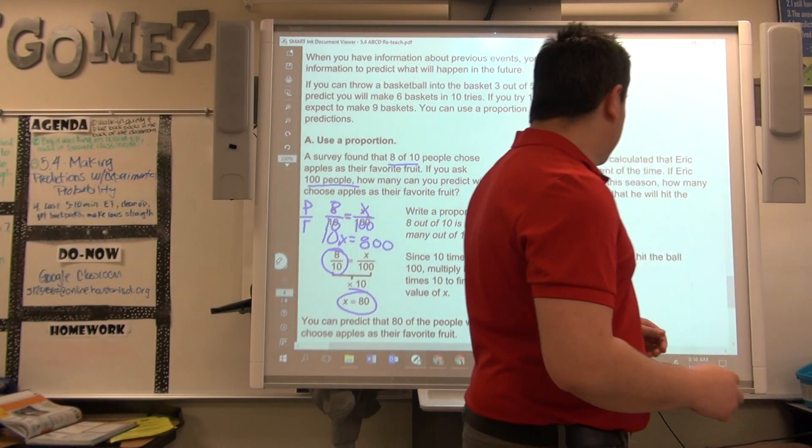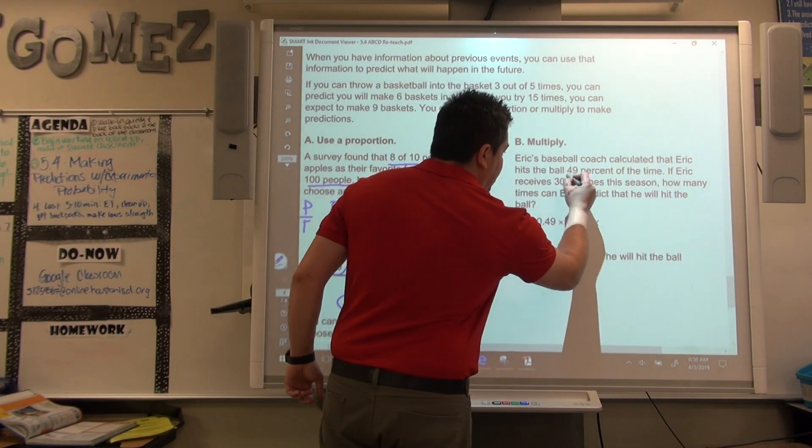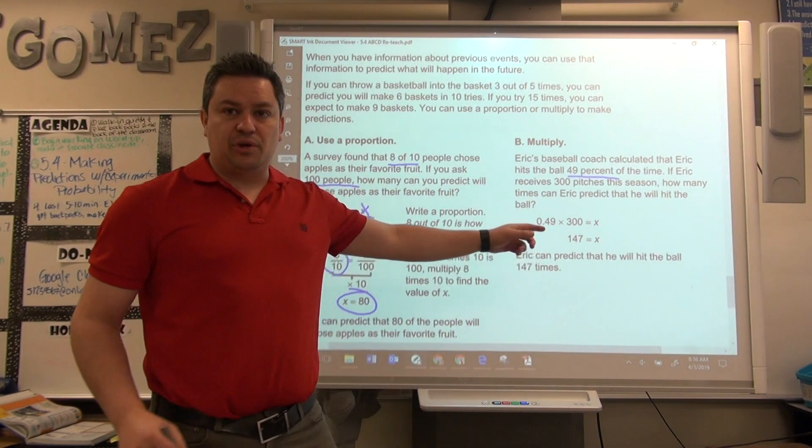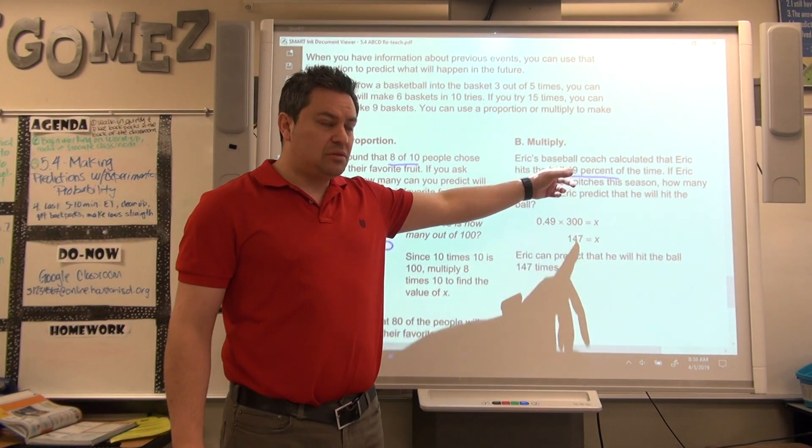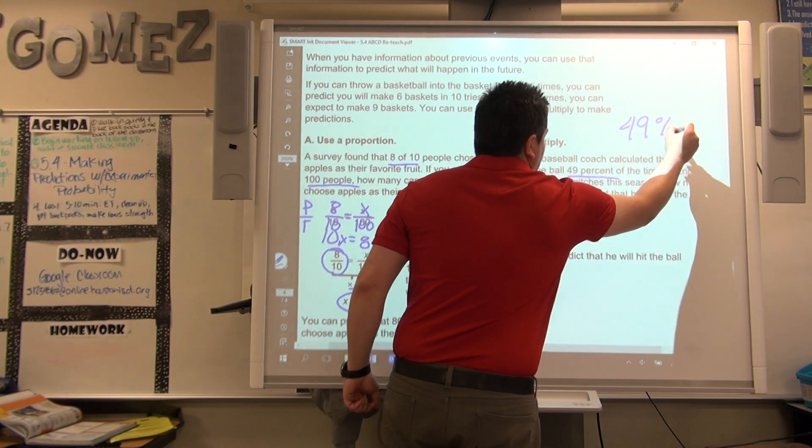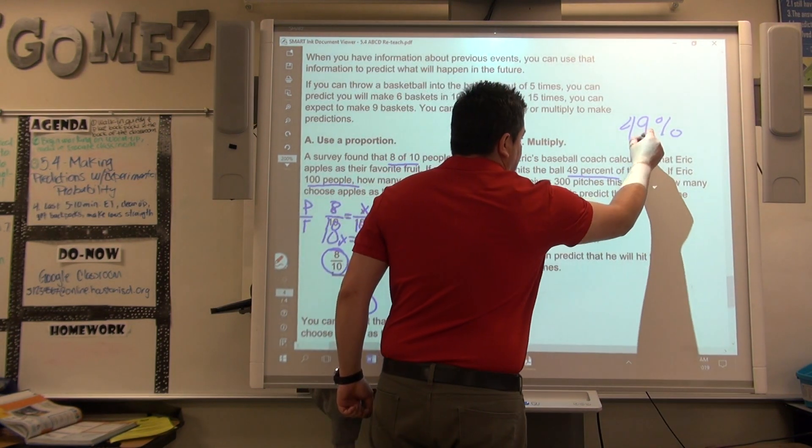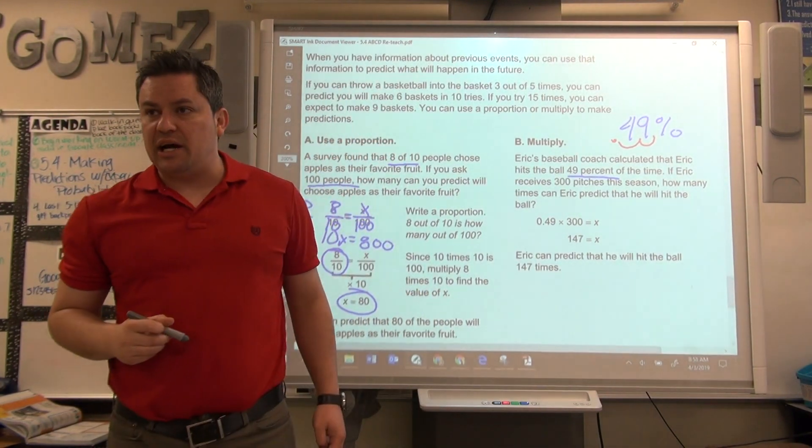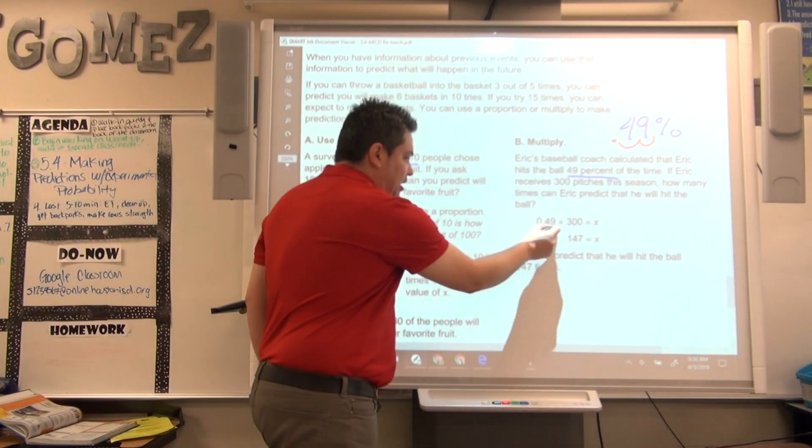Now, how would you do that? Whenever you're given the percent, right here, all you have to do is convert that to decimal. And how do we convert percentages to decimal? Move two times to the left. Very good. So, it'll be 0.49, which is right here.